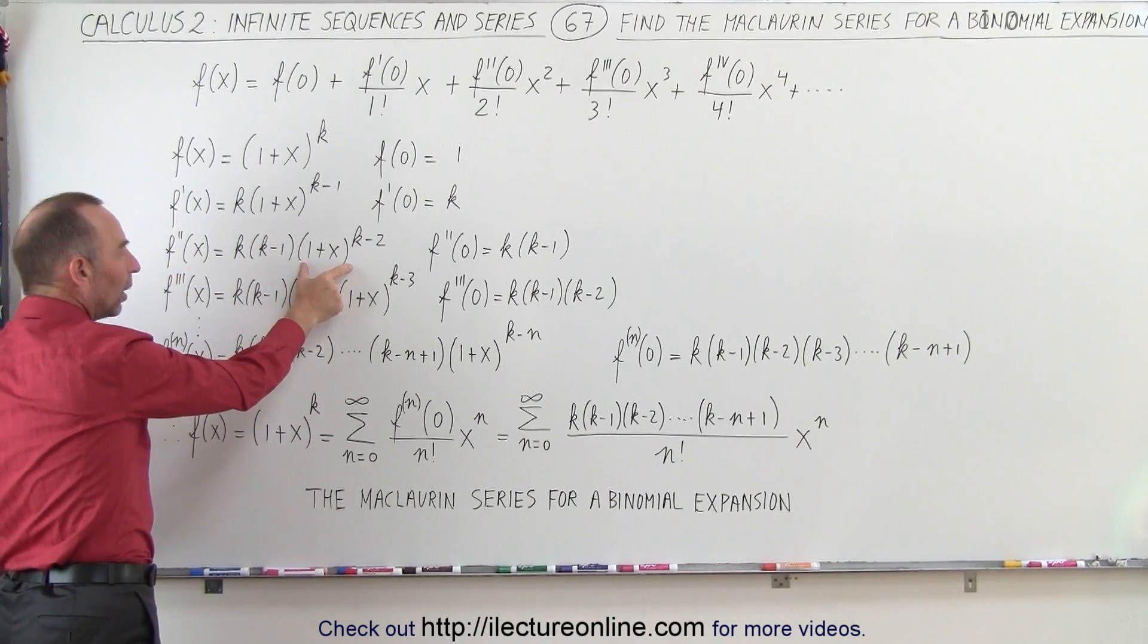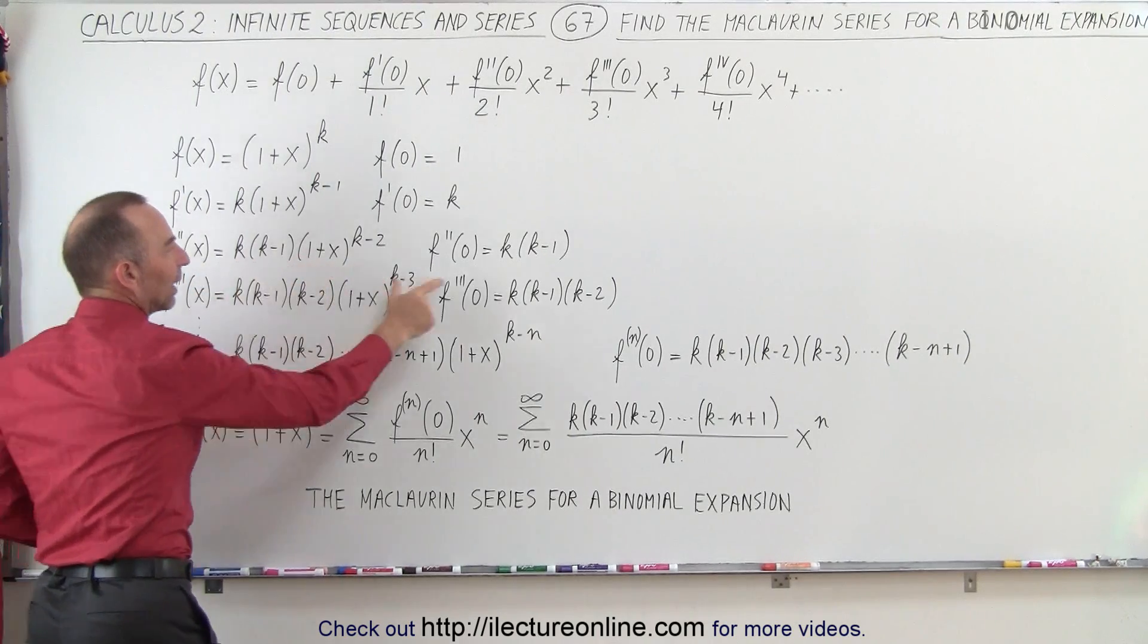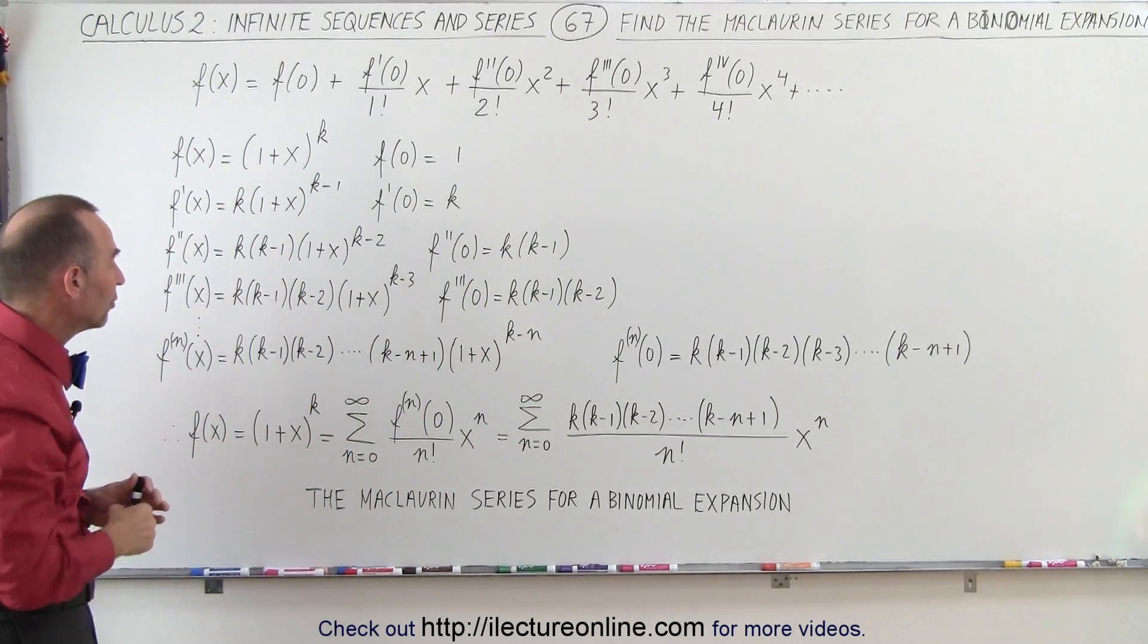When we evaluate this function at x equals 0, notice that this still becomes 1. We have 1 times this, so we get k times k minus 1. And the pattern continues.